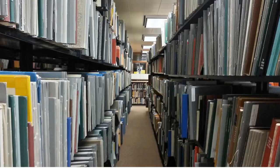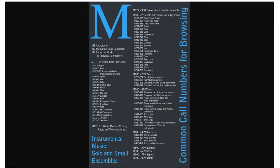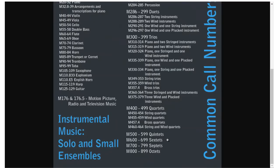On the shelves in the music library, scores are arranged in the Library of Congress system, which organizes music by performing ensemble and then by composer within works of the same type. The chamber music section is divided into duets, trios, quartets, etc.